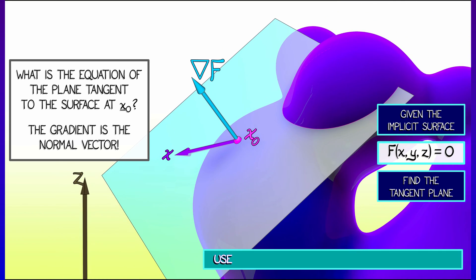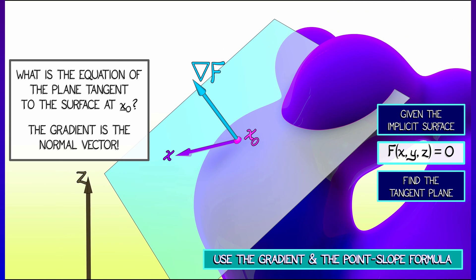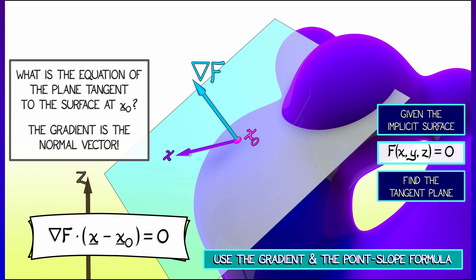We can simply use the point-slope formula that we learned back in Volume 1. That is, if we take the dot product between grad f and the vector x minus x-naught, that base point, set that equal to zero, that gives us a formula for the tangent plane. That is a great way to compute a tangent plane of an implicit surface.